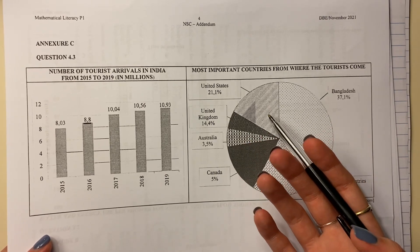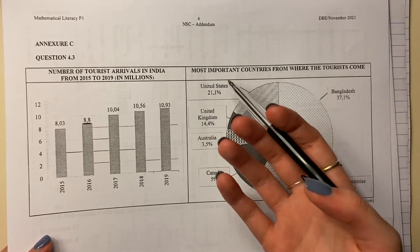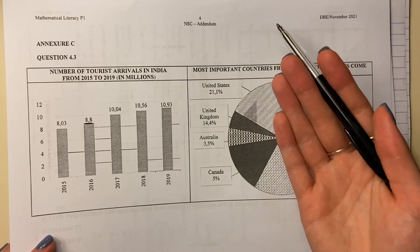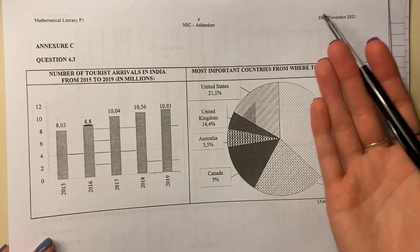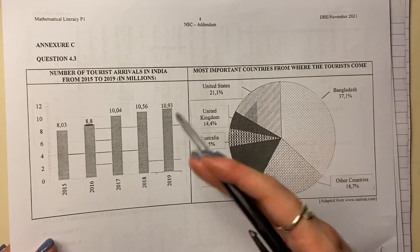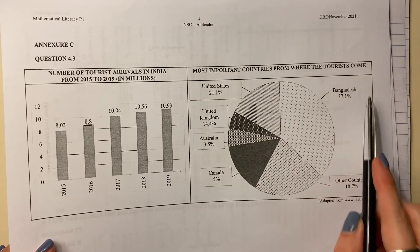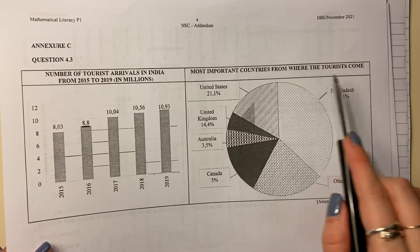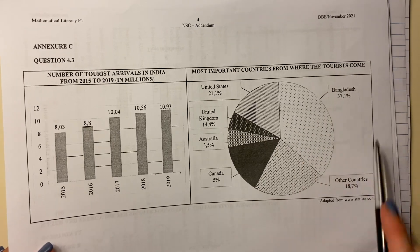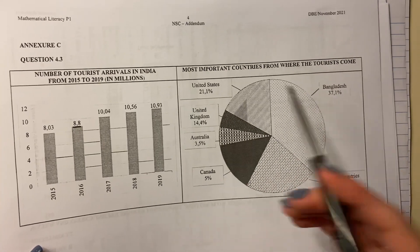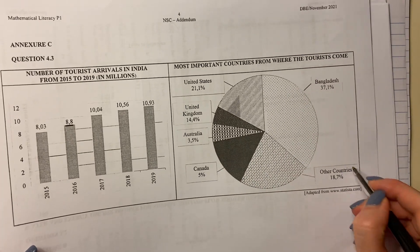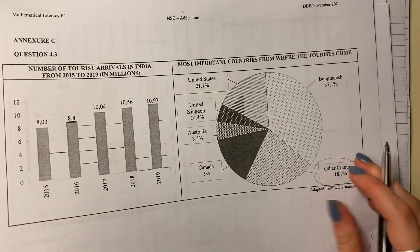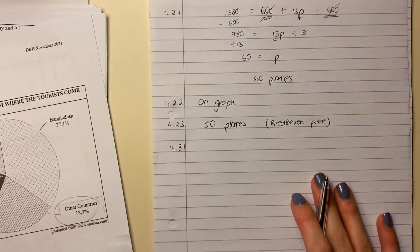Remember, probabilities is generally you're talking about a part of one, like a fraction of one or percentage of 100. So you should be looking over here, because this is sort of where the probability is going to be. They're saying 'other', so it's going to be 18.7%.